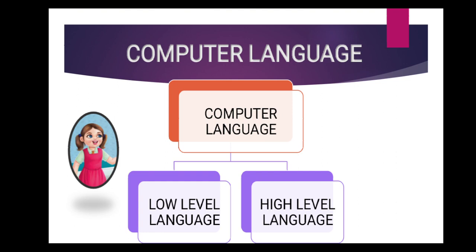So my dear students, can you see on the screen? Computer language is of two types. First one is low level language, and second one is high level language. Low level language is the language which a computer understands — for example, 0 and 1, in which 0 stands for off and 1 stands for on.